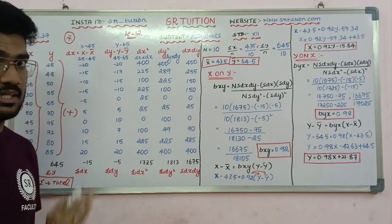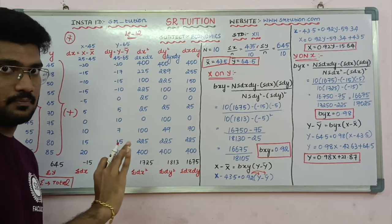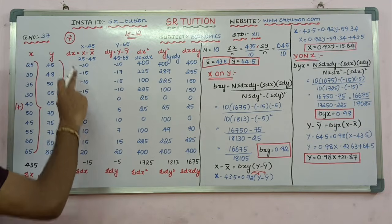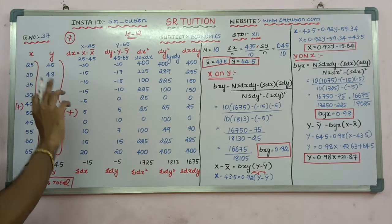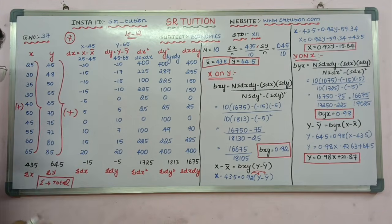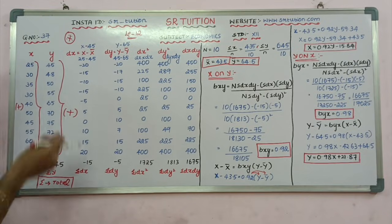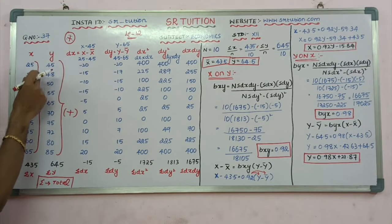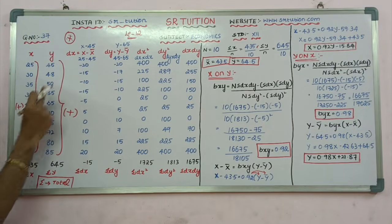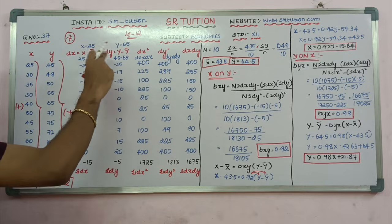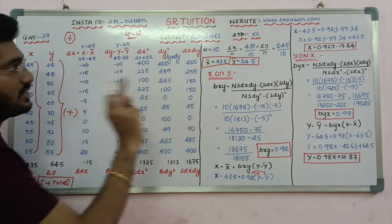So ȳ equals 64.5. Now we will write down: dx is equal to x minus x̄. So dx equals x minus x̄, where x̄ equals 43.5.